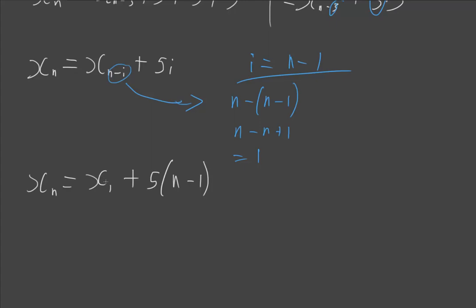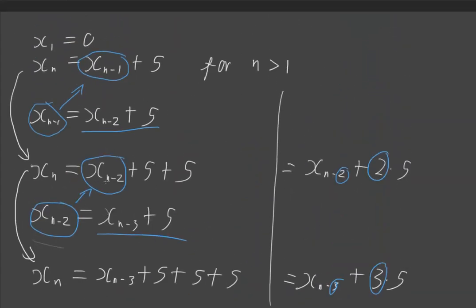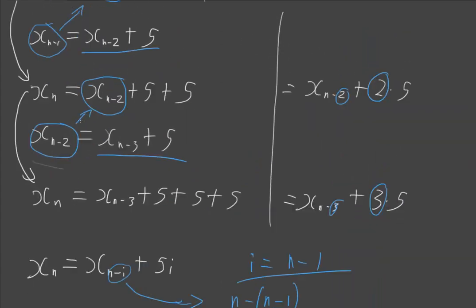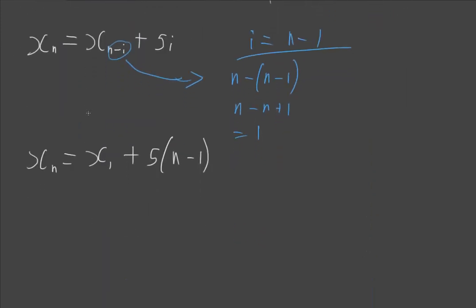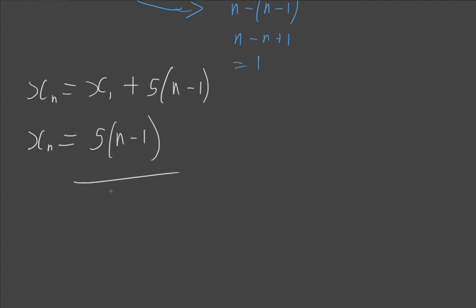Now we know that x₁, if we come all the way up here to our recursive function definition, x₁ is 0. So we can substitute that in. xₙ is equal to, I'm not going to write the 0, 5 outside of n-1. And so that's the solution to our recursive equation. And yay.